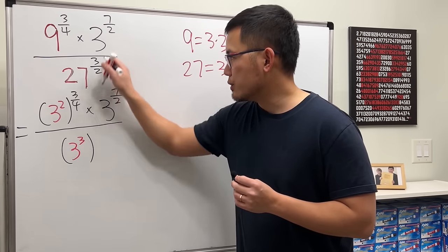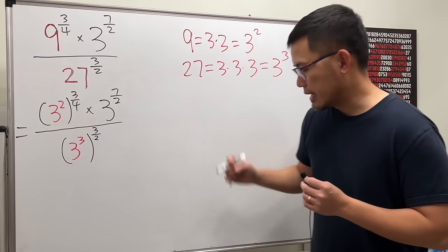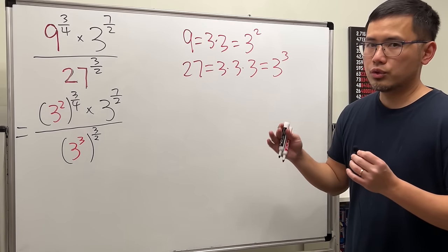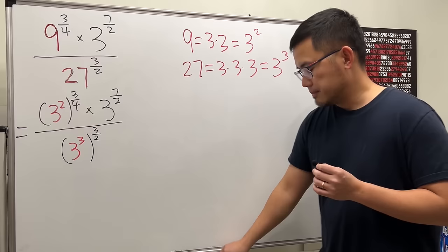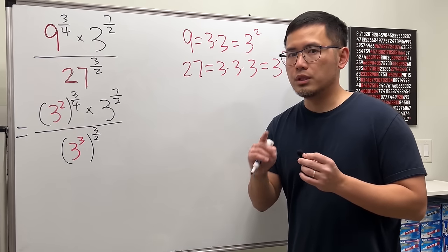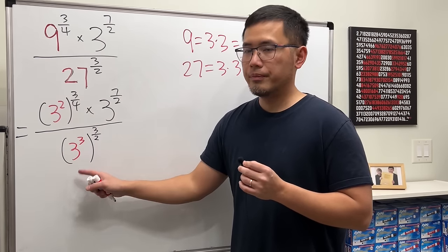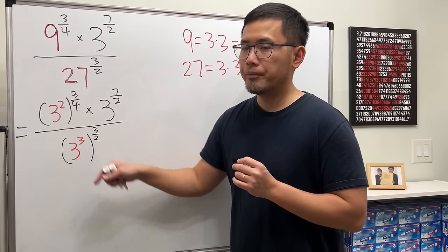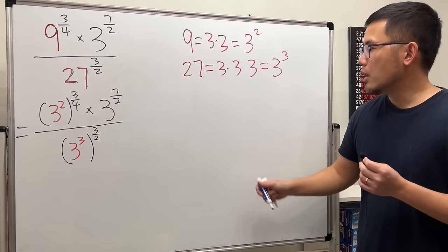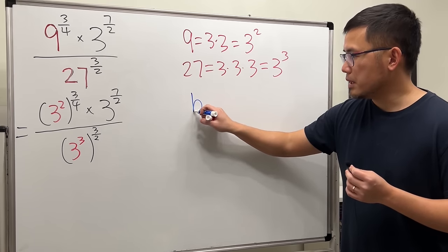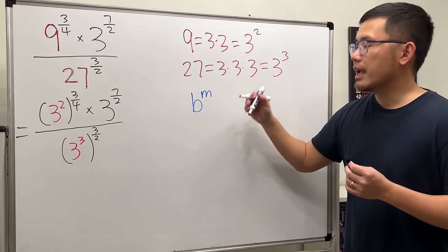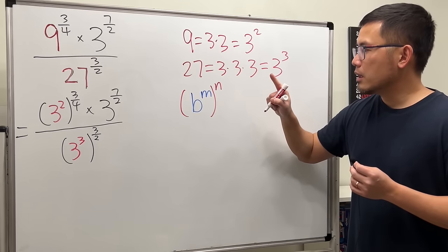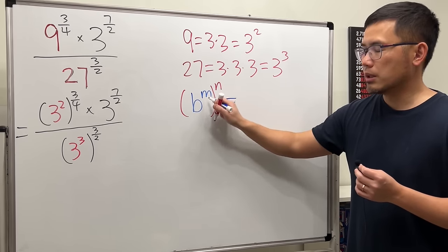So the first step is changing all the bases to 3 to some power. Next we will use one of the rules of exponents. Notice we have 3 squared raised to the 3 over 4 power. The rule of exponents is: when we have a number b raised to the power m, and then we put this in parentheses raised to the n power, we can actually just multiply the powers.